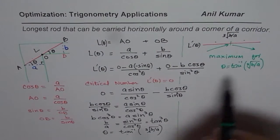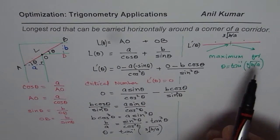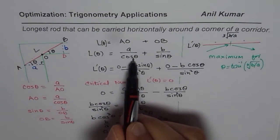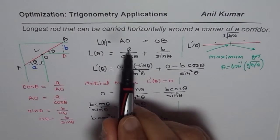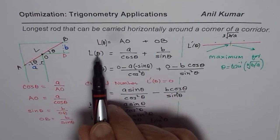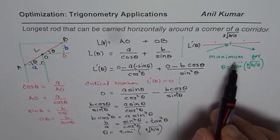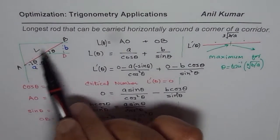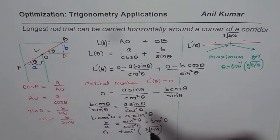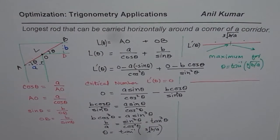Once you have shown this is a maximum at theta = tan⁻¹(∛(b/a)), the next part is to find the length itself. Substitute the angle back into your original expression l(θ) = a / cos(θ) + b / sin(θ). You know A and B and the angle theta, so you can find the maximum length. There is also an alternate way to calculate the length.